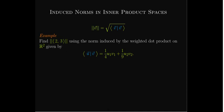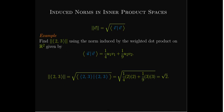Let's look at a simple example before we talk about the properties of this induced norm. We're going to use the weighted dot product on R2 with weights one-fourth and one-ninth, and we're going to measure the norm of the vector with components 2 and 3. The norm is the square root of the inner product of that vector with itself. Putting 2 and 3 in the place of u1, u2 and v1, v2, I get that the length of that vector in that inner product space is radical 2.